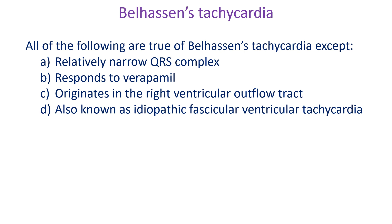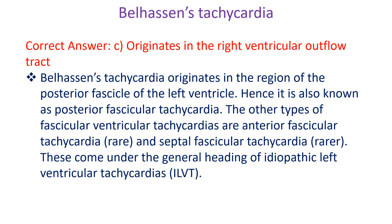All of the following are true of Belhassan's tachycardia except: A. Relatively narrow QRS complex. B. Responds to verapamil. C. Originates in the right ventricular outflow tract. D. Also known as idiopathic fascicular ventricular tachycardia. Correct answer: C. Originates in the right ventricular outflow tract. Belhassan's tachycardia originates in the region of the posterior fascicle of the left ventricle; hence it is also known as posterior fascicular tachycardia. Other types include anterior fascicular tachycardia and septal fascicular tachycardia, all under the heading of idiopathic left ventricular tachycardias.